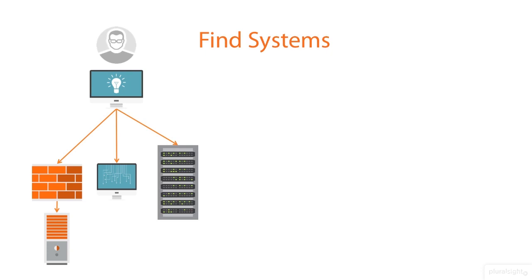Our first objective in scanning the network is to find systems. We want to know about any system connected to the network that is within our scope of the project. When working with a customer before the project starts, we need to identify specific systems or network ranges that are part of the investigation and are targets for information gathering. This scope may be very specific, defining targets down to their IP addresses, or they can be very vague — for example, you may have just the company's name or domain name.